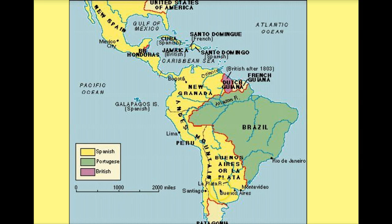Most of Latin America is controlled by the Spanish and the Portuguese. The Spanish actually control a lot of territory in North America — the West Coast all the way up to Oregon, through New Spain, Central America, and the West Coast of South America. Brazil is under control of the Portuguese. So it's a huge amount of land that they have control of.